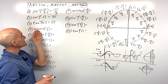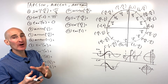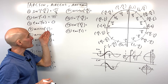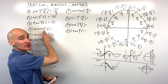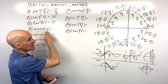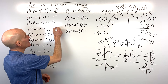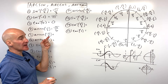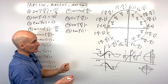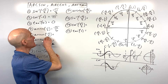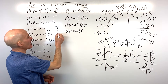For number four, the arc sine of negative one half — arc sine and sine inverse are just different ways of writing the same thing. This asks: sine of what angle equals negative one half on the restricted domain from negative pi over two to positive pi over two? Sine is the y-coordinate, so that's negative pi over six. For number five, the arc cosine of negative square root three over two — cosine restricted from zero to pi, the x-coordinate is negative root three over two at five pi over six.